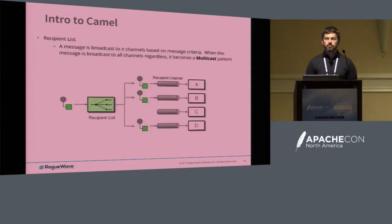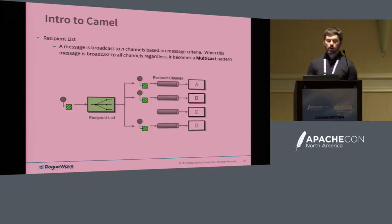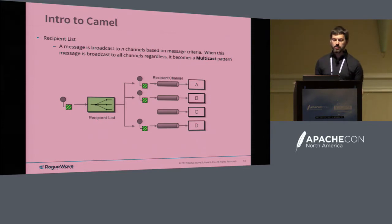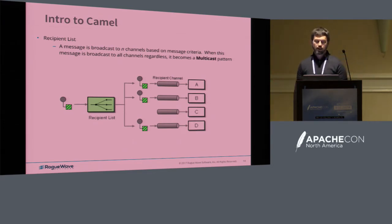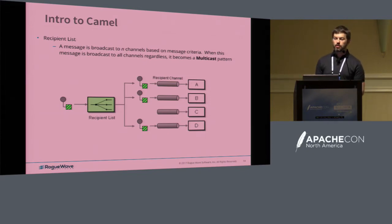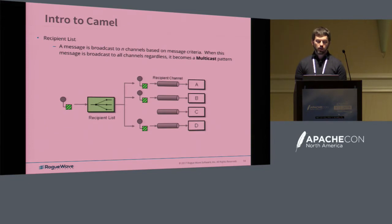Recipient list — broadcast: a message comes in and you broadcast it to N channels based on the message criteria. If you broadcast it to all, this would be multicast — that's the degenerate case. But you might want to select only certain endpoints or channels that this message gets routed to. Recipient list will do that.